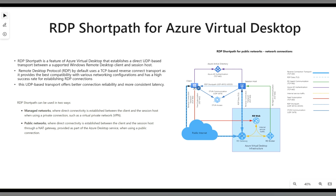Reverse connect is called so because it creates an outbound connection from your session host to the Remote Desktop gateway, and then it connects back to your client.